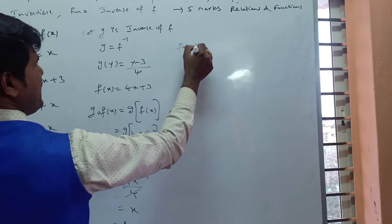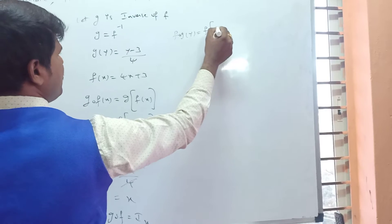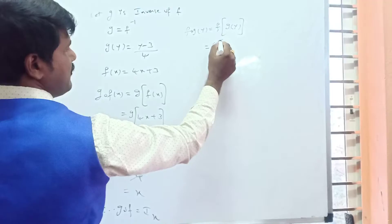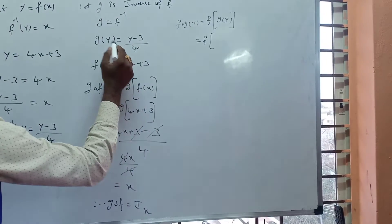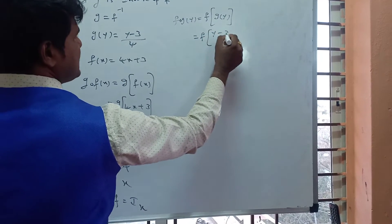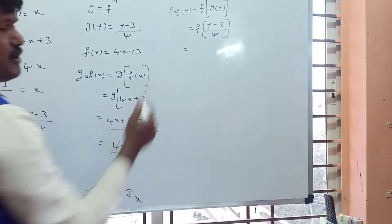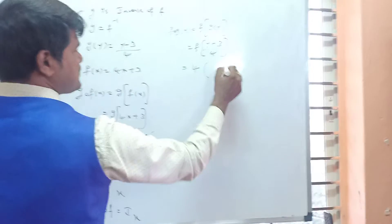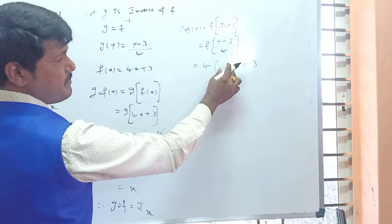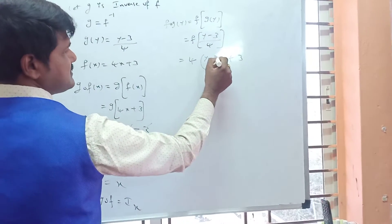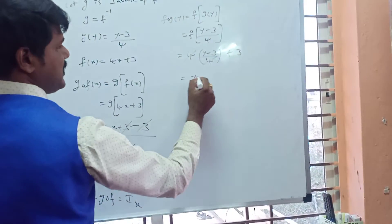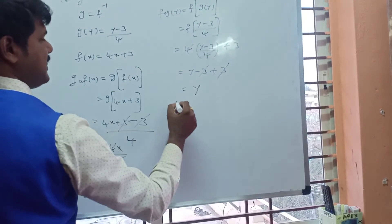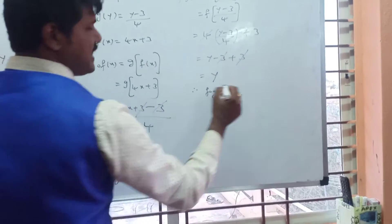Next, consider f∘g(y). Removing the bracket: f(g(y)) = f((y − 3)/4). Using f(x) = 4x + 3, substitute x = (y − 3)/4: we get 4·(y − 3)/4 + 3 = (y − 3) + 3 = y. Therefore, f∘g = Iᵧ (identity on Y).